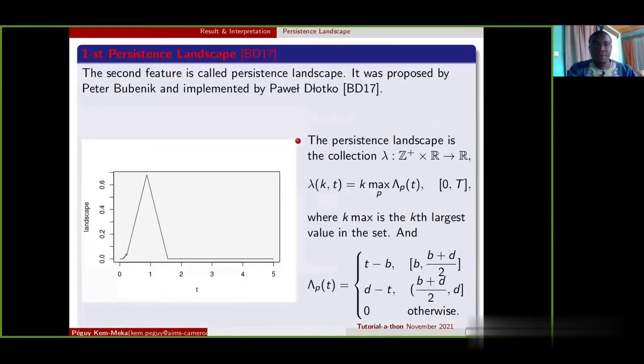Another feature that we have extracted is called persistent landscape. The advantage of this other feature is that it can be easily associated with the tools from machine learning and statistics.